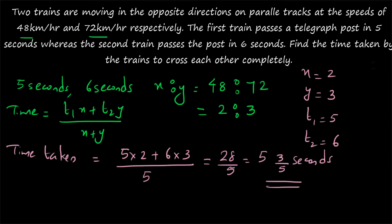Here the ratio was not given directly, but you need not think you cannot apply the formula. Just find out the ratio of the speeds first. If the ratio of the speeds is known, apply the formula: time = (T1·x + T2·y) / (x + y). By heart this formula — it is very, very important. This question can be solved within seconds if you know it.